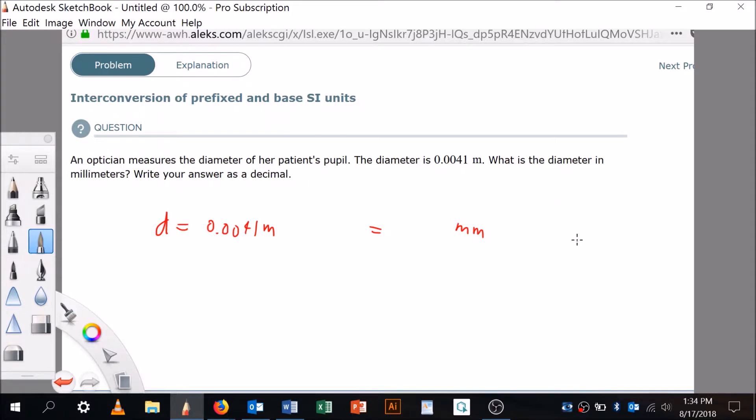So we know that that little m means 10 to the minus 3. So in other words, one millimeter, watch this, is equal to one times 10 to the minus 3 meters.